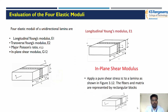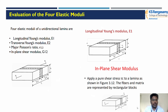There are four moduli of elasticity used in composite materials. First is the longitudinal elastic modulus, denoted E1. Second is the transverse elastic modulus, denoted E2. Third is the major Poisson ratio, ν12. Fourth is the in-plane shear modulus, G12. These are the four types of moduli used in laminate analysis.